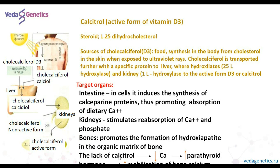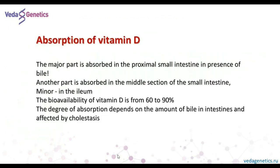The target organs of vitamin D are first of all the intestine, where it regulates production of proteins and absorption of calcium. It is also functioning in the kidneys, regulating resorption of calcium. In bones it regulates the production of hydroxyapatite. The lack of vitamin D causes osteoporosis.